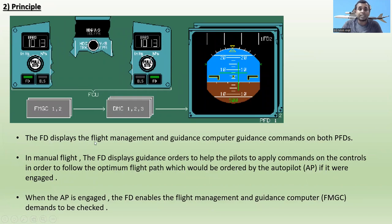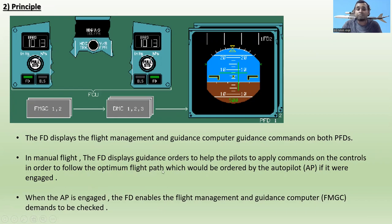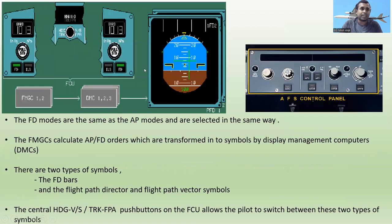The flight director displays the Flight Management and Guidance Computer guidance commands on both PFDs. In manual flight, the flight director displays guidance orders to help pilots apply commands on the controls in order to follow the optimum flight path — which would be ordered by the autopilot if it were engaged. When the autopilot is engaged, the flight director enables the FMGC demands to be checked.